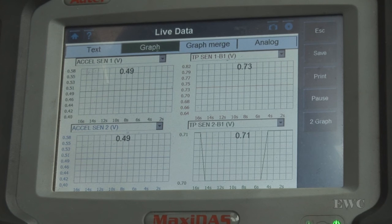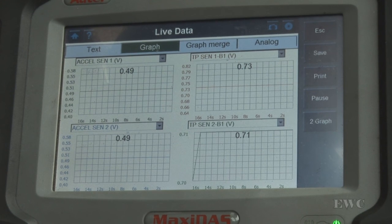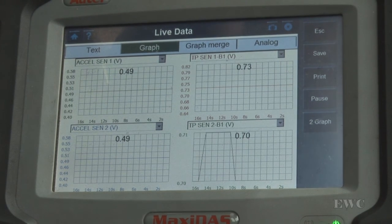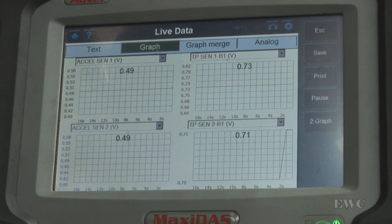That's why when you're doing a TPS test using the scan tool, you have to go slow to be able to catch that little dropout that you might miss if you went fast.